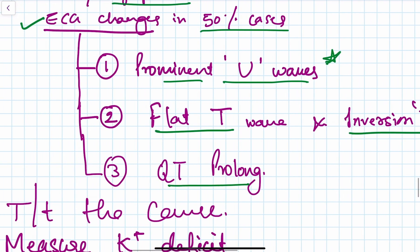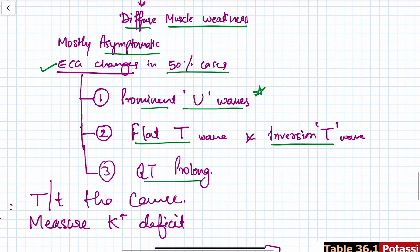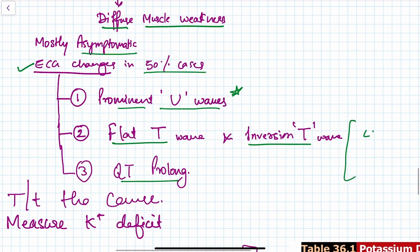QT prolongation can also be seen, but these are not the sole causes. Similar findings can occur in left ventricular hypertrophy and with drugs or toxins such as digitalis.